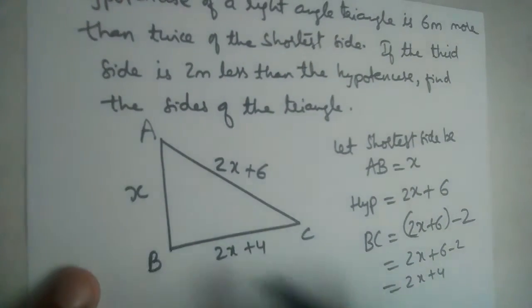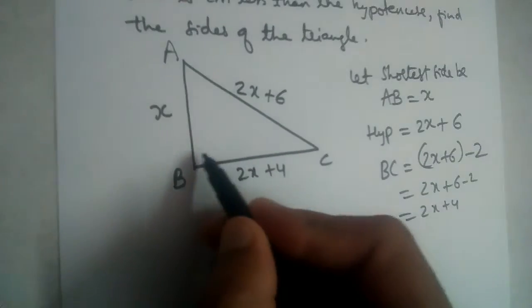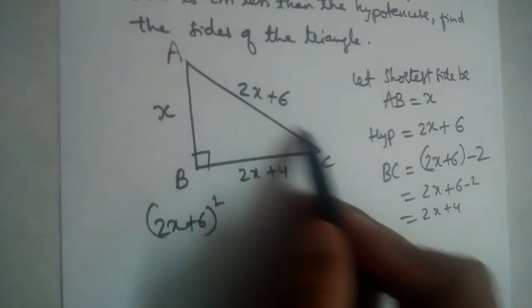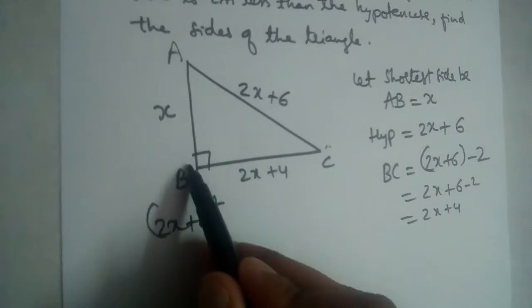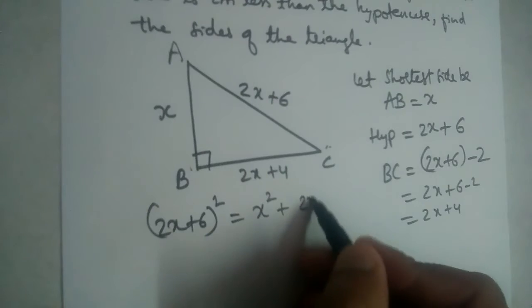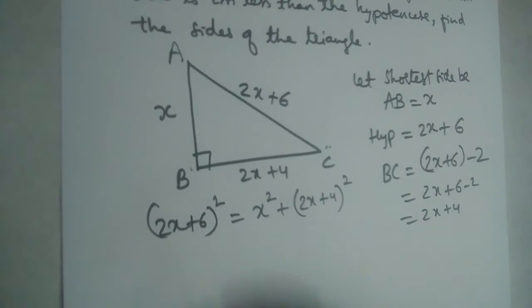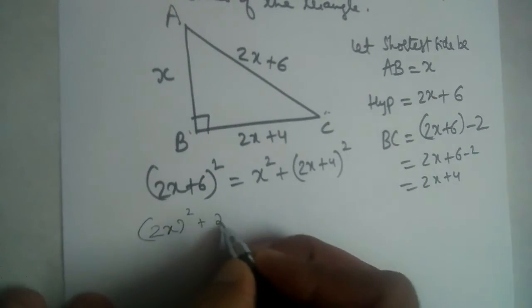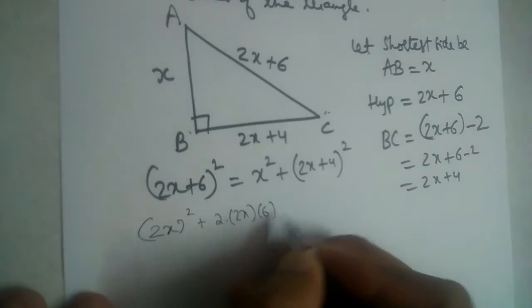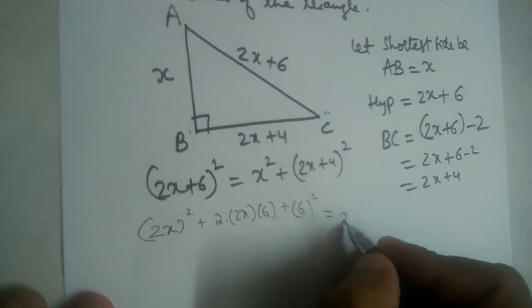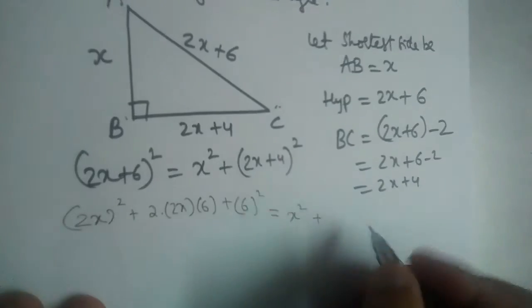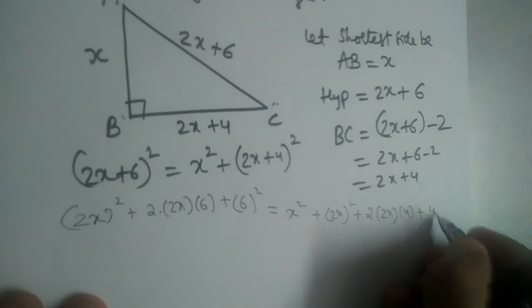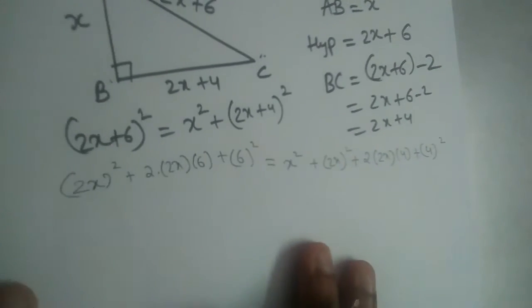If we find the value of X and substitute it, we get all three sides. Apply Pythagoras' theorem since it is a right angle triangle: (2X + 6)² equals the sum of the squares of the other two sides, that is X² plus (2X + 4)². Now use the (a + b)² formula: a² plus 2ab plus b² for both sides.